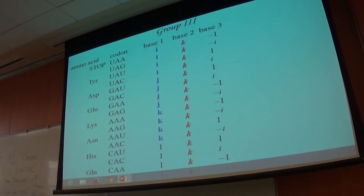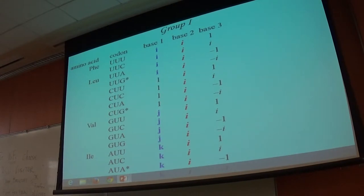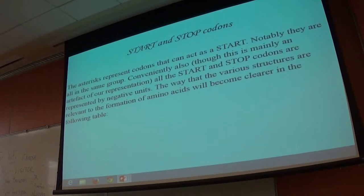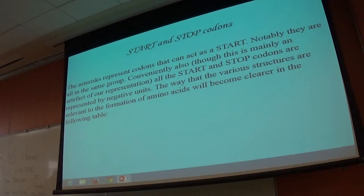The asterisks represent stop codons, and notably they're all in the same group — all in group one. Also, the start and stop codons can be represented by negative values — that's just an artefact of the presentation, but it's convenient.